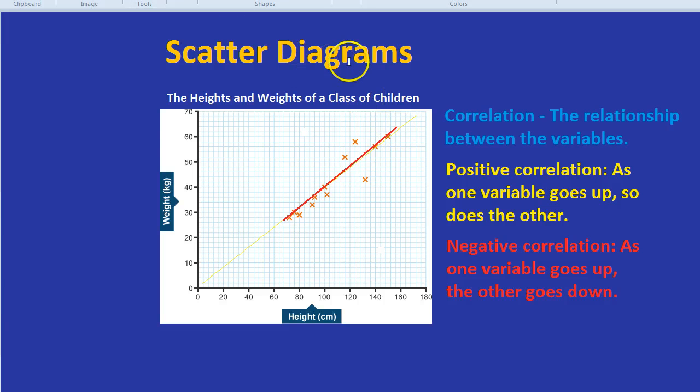A final challenge on our scatter diagram is to estimate values. Now the thing is, we need a line of best fit to estimate values. Many students try to guess values just looking at the points. But you need a line of best fit. In fact, with a scatter diagram, you pretty much always need a line of best fit, even if they don't ask you for one.